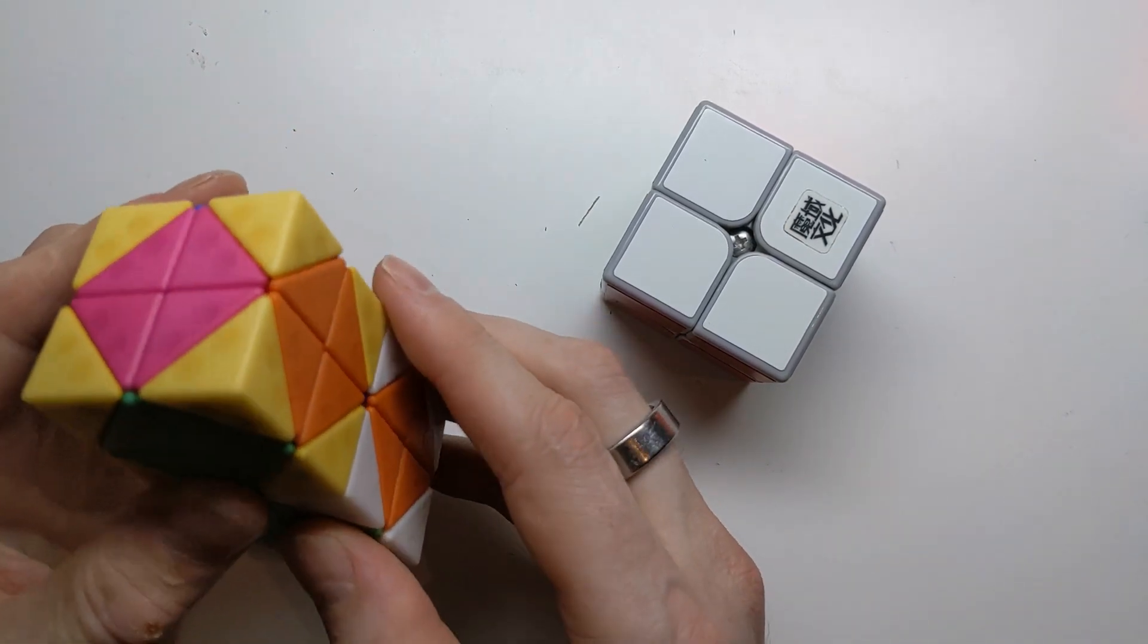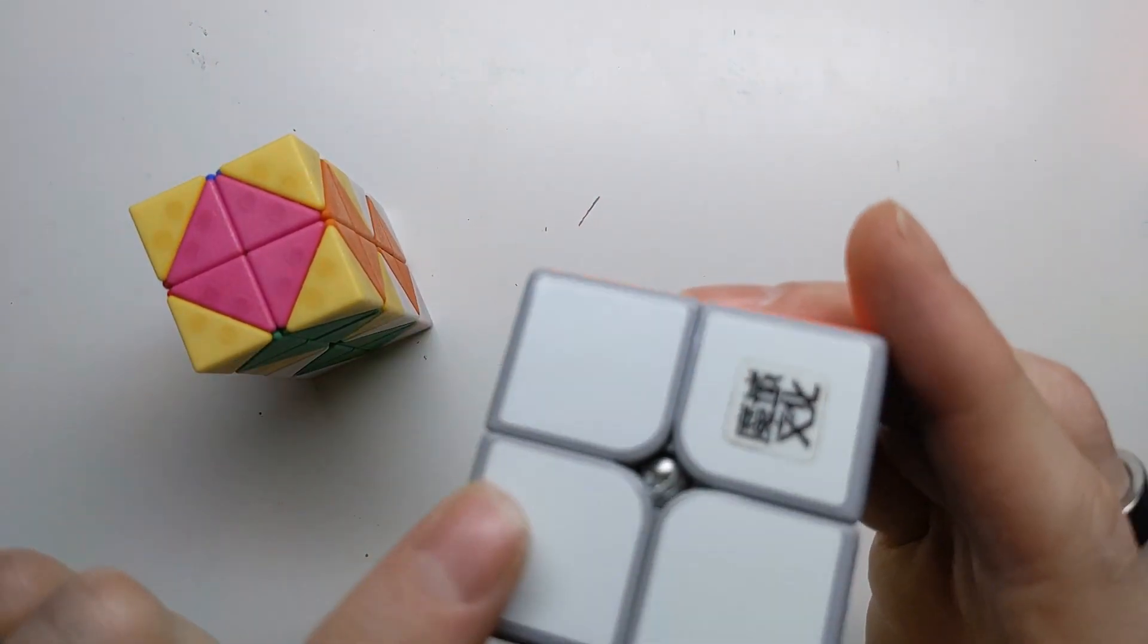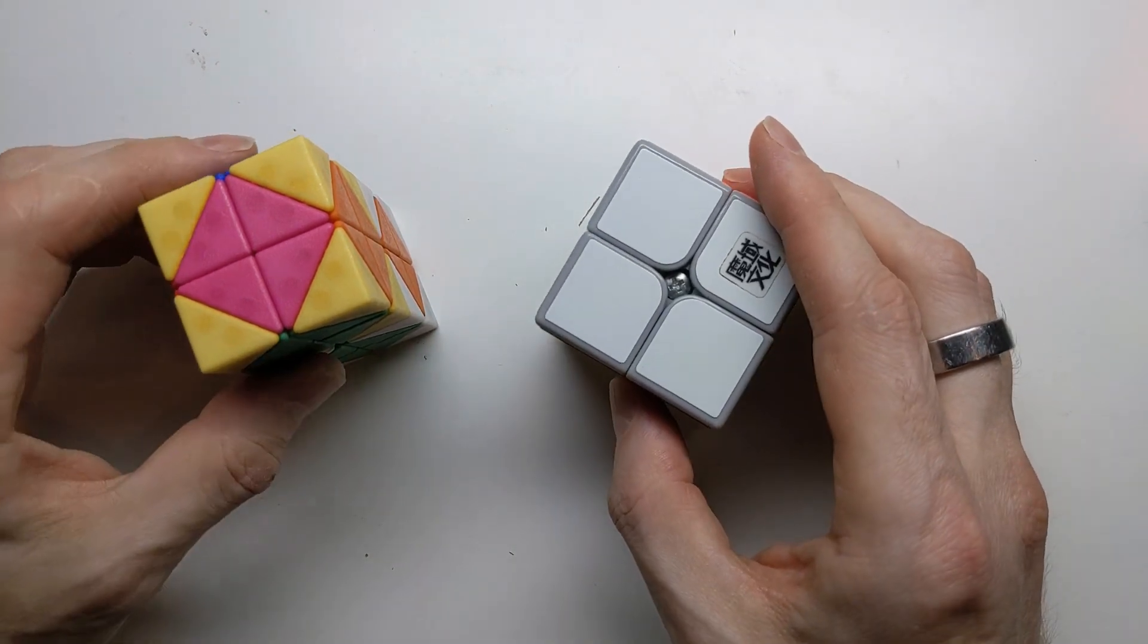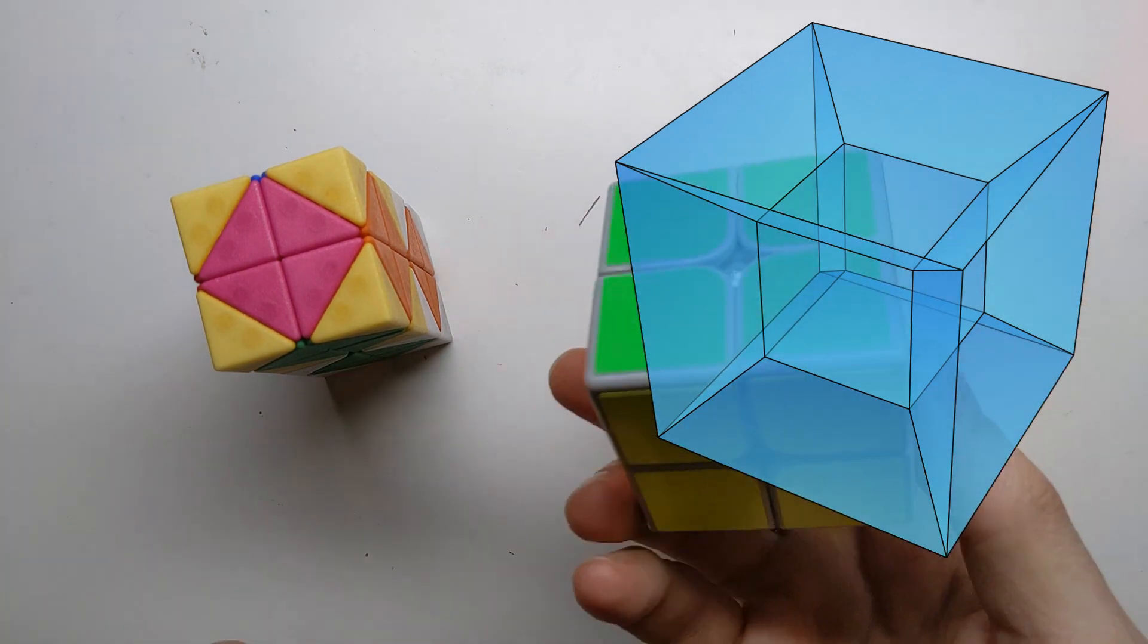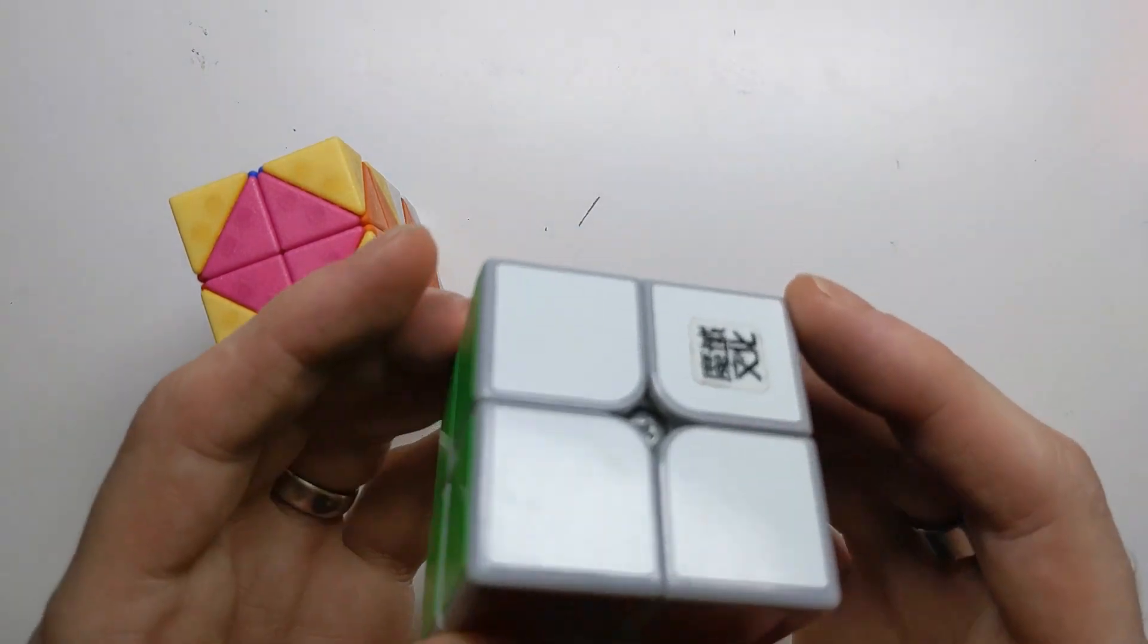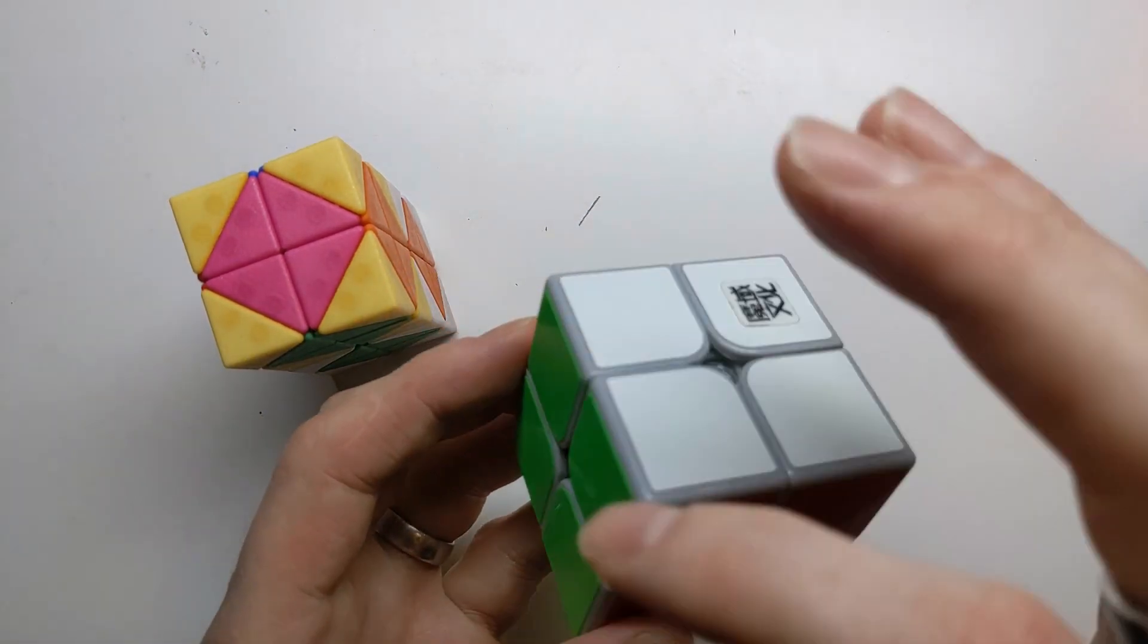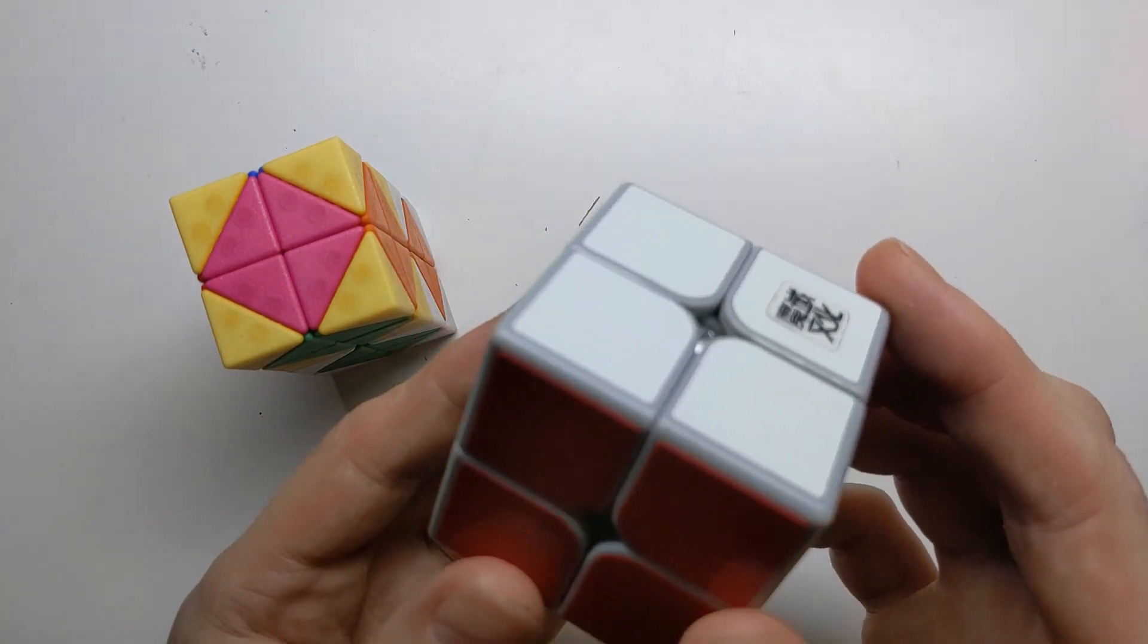Think of it like this: a cubic puzzle has square two-dimensional faces. So a four-dimensional hypercubic puzzle has faces which are cubes, three-dimensional. So each of those faces would be made up of eight cubes, just like this regular 2x2x2.